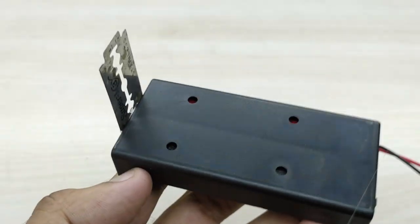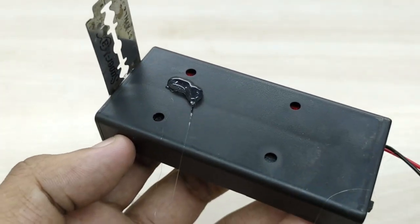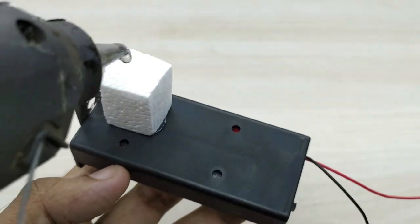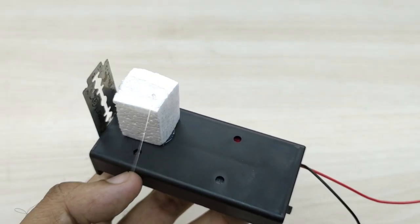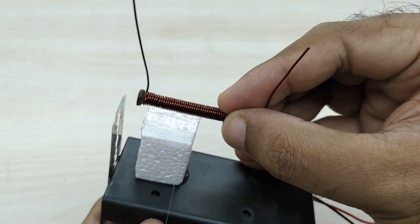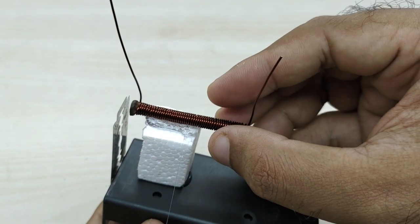Now fix the thermocole piece on the battery pack as shown. Fix the coil on the thermocole such that the tip of the nail has a gap of around two millimeters with the razor blade.